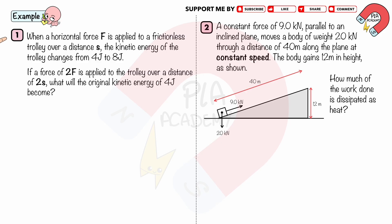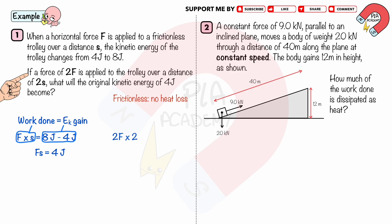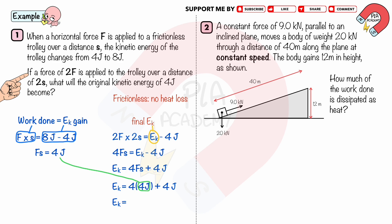Work example 1. When a horizontal force F is applied to a frictionless trolley over a distance S, the kinetic energy of the trolley changes from 4 joules to 8 joules. If a force of 2F is applied to the trolley over a distance of 2S, what will the original kinetic energy of 4 joules become? The frictionless surface means no heat energy loss, so the work done by force F equals the kinetic energy gain. The work done equals F times S, and Ek gain equals 8 minus 4 equals 4 joules, so FS equals 4 joules. If a force of 2F is applied over distance 2S, then 4FS equals Ek minus 4 joules. Substituting FS equals 4, we get the final Ek equals 20 joules.